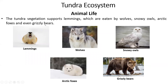If we talk about animal life in the tundra, large animals include wolves, snowy owls, arctic foxes, and grizzly bears. Lemmings are small animals that eat vegetation. Grizzly bears feed on fish when the season comes and water is flowing. These animals are well adapted to grow within the tundra ecosystem.